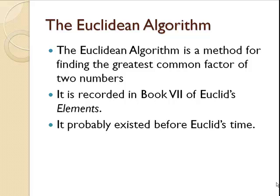The Euclidean algorithm is a method for finding the greatest common factor of two numbers, and it was from Book 7 in Euclid's Elements, although it probably existed before Euclid's time.